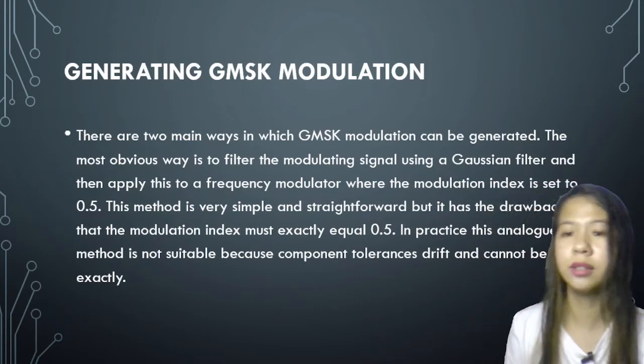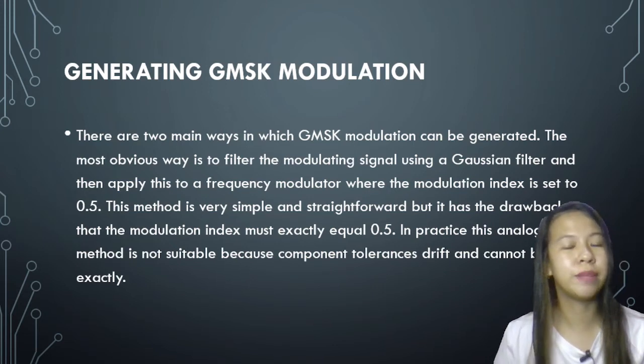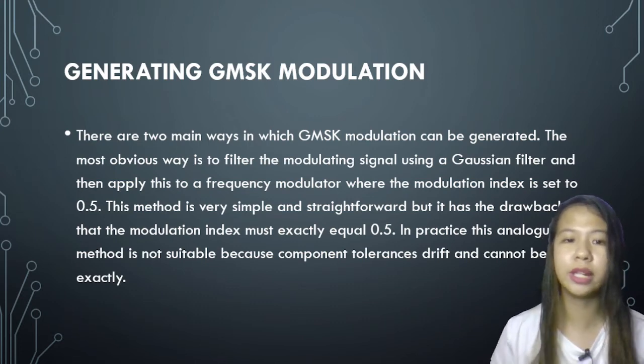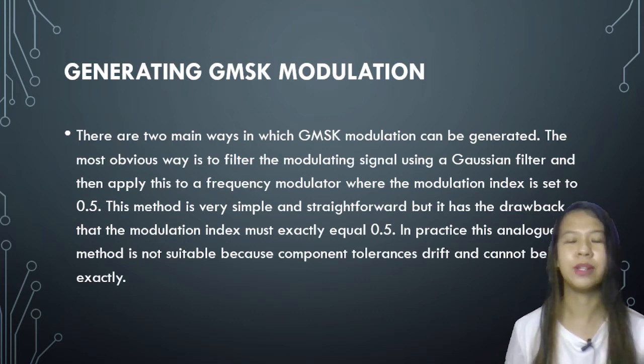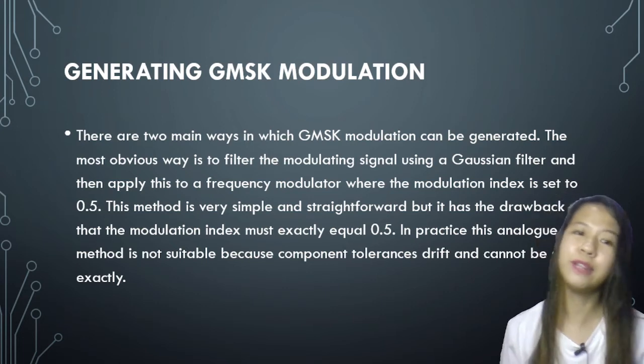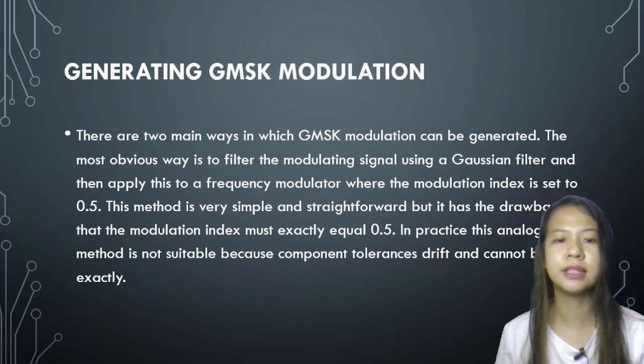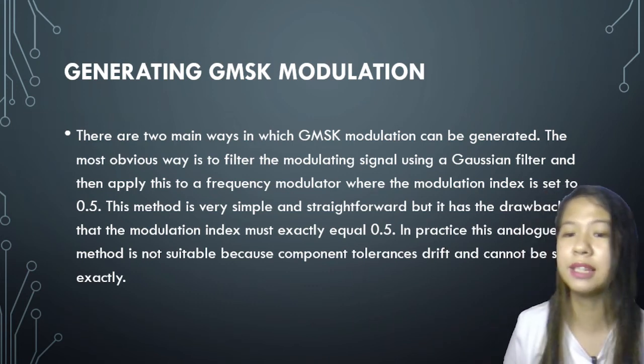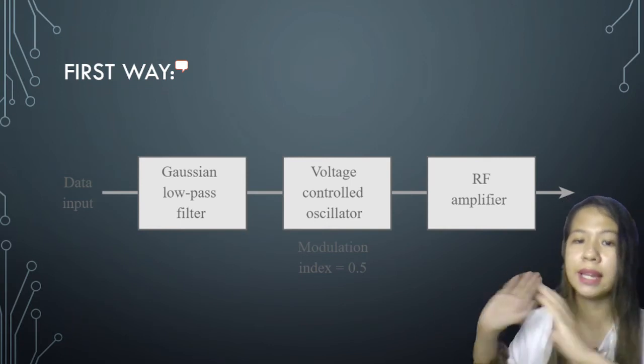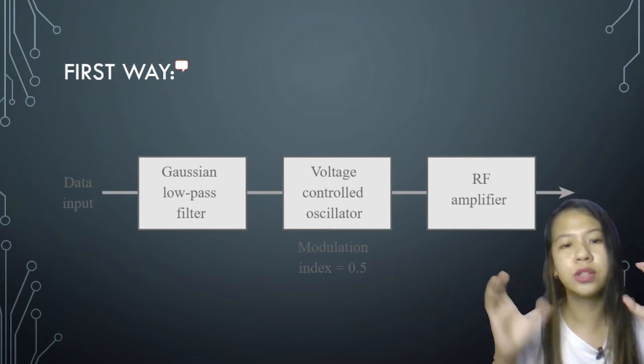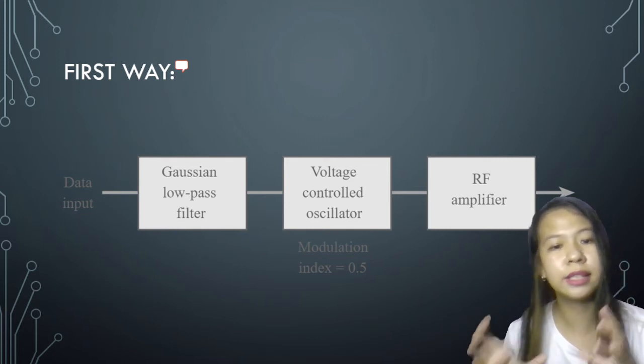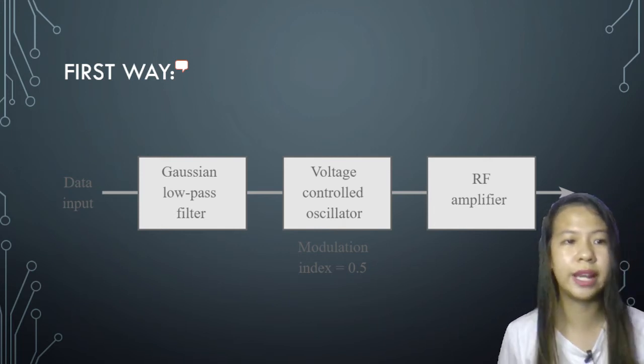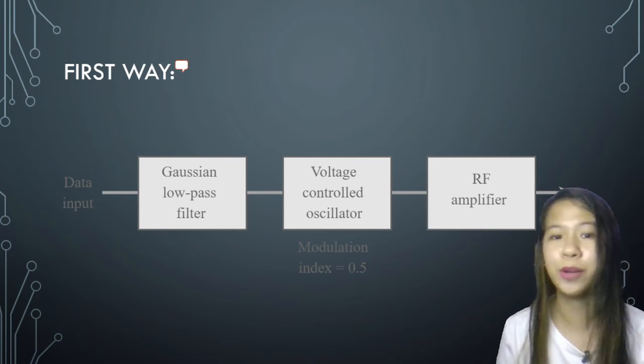Now, for generating GMSK modulation, there are two main ways in which GMSK modulation can be generated. First, the most obvious way is to filter the modulating signal using a Gaussian filter and then apply it to a frequency modulator where the modulation index is set to 0.5. Like I said before, this method is very simple and straightforward, but it has the drawback that the modulation index must exactly equal 0.5. In practice, this analog method is not suitable because components tolerance drift and cannot be set exactly. Now, this is the first way in the picture. From data input, it will pass the Gaussian low pass filter, then go to the voltage controlled oscillator, which the modulation index is equal to 0.5, then to RF amplifier.